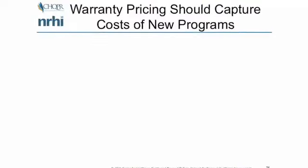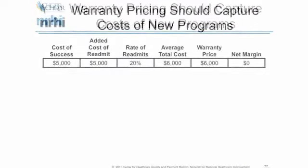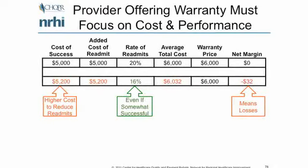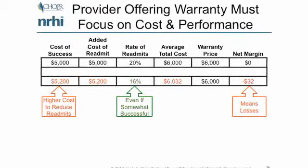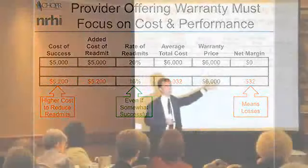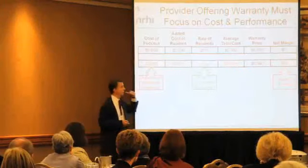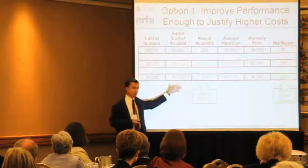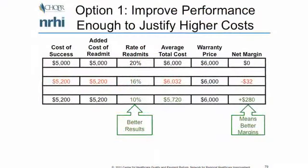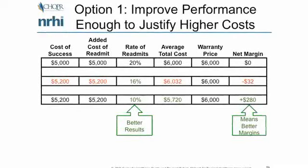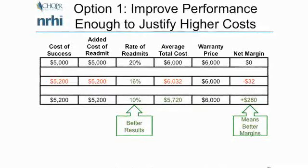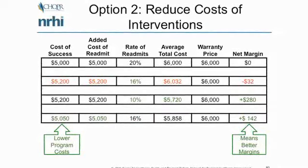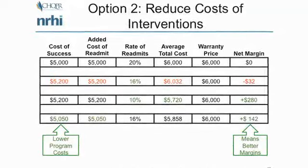You've also got to capture the cost of new programs. If I put this in place but it costs more to keep readmissions down, then if I don't get readmissions far enough down, I may end up losing money. So I've got to figure out a way to either have the readmission rate come down enough that the investment pays off, or figure out how to do that readmission reduction intervention more cheaply.